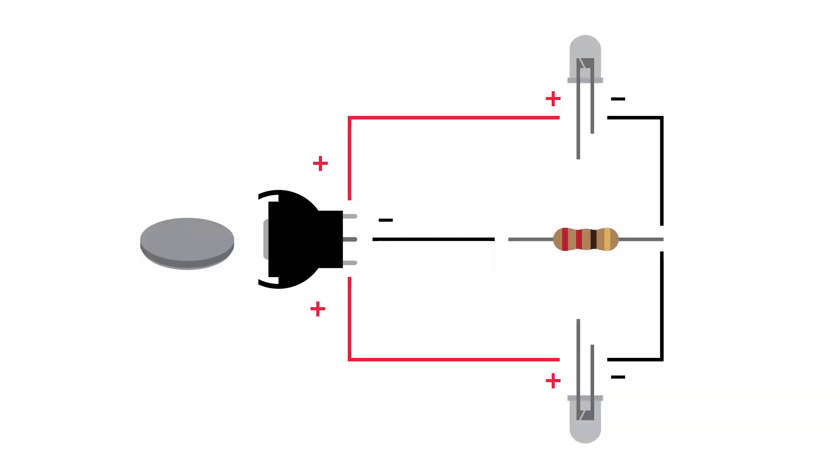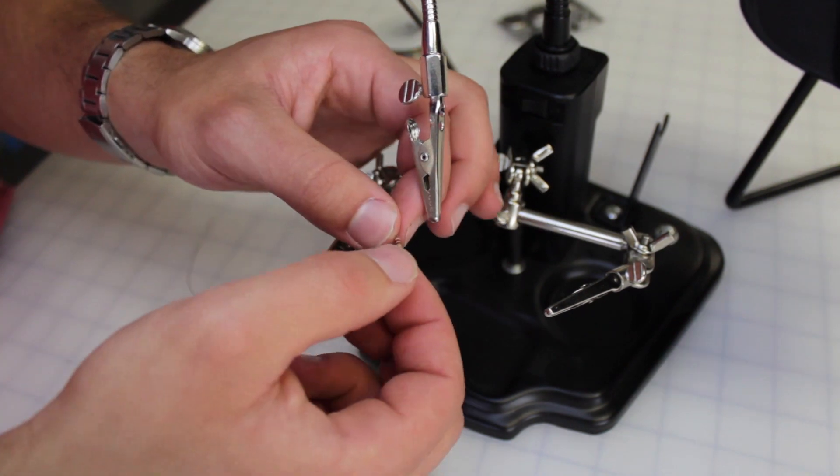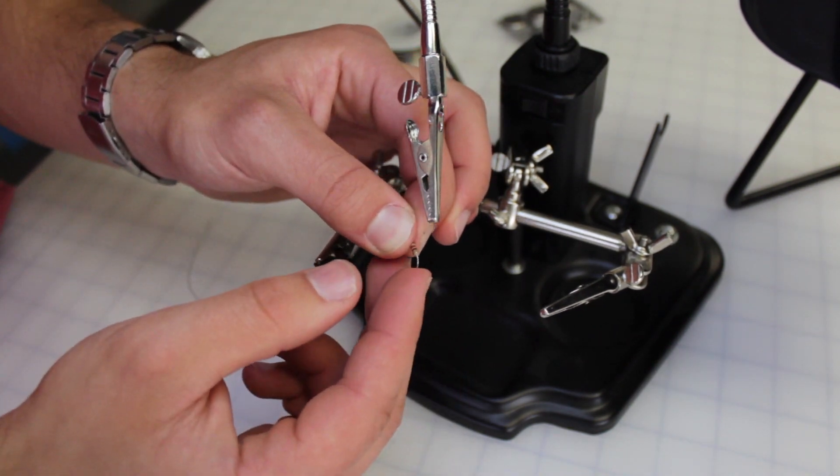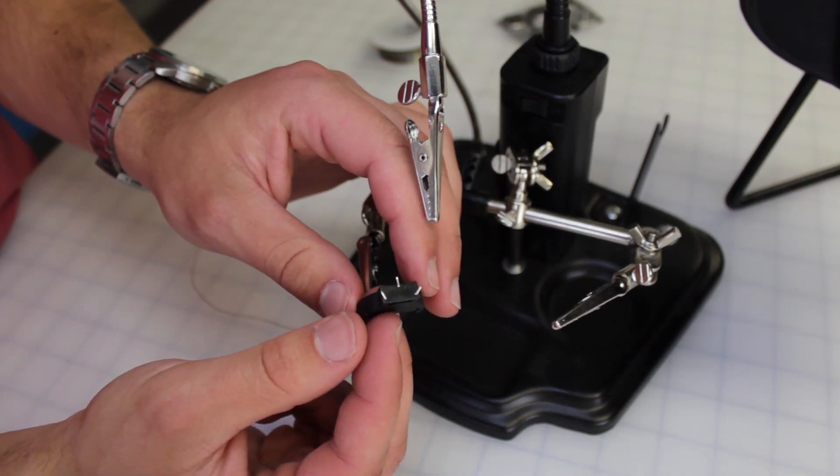We're going to use this diagram to connect our electronics. To begin, cut one of the leads on the resistor down and bend it at a 90 degree angle. Then on the battery holder we're going to bend the two outside leads outward and the middle lead down.